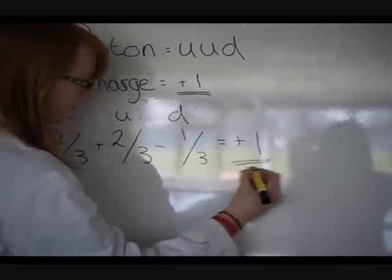And a neutron is made of two down quarks and one up quark, because minus one-third, minus one-third, plus two-thirds equals zero.